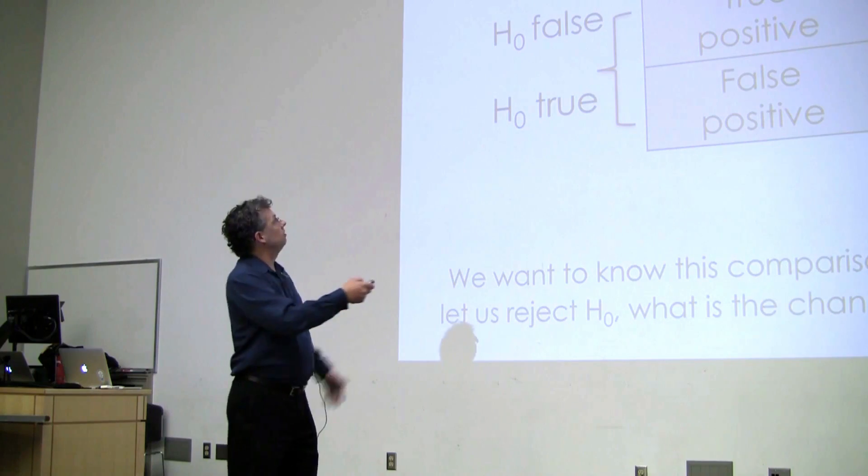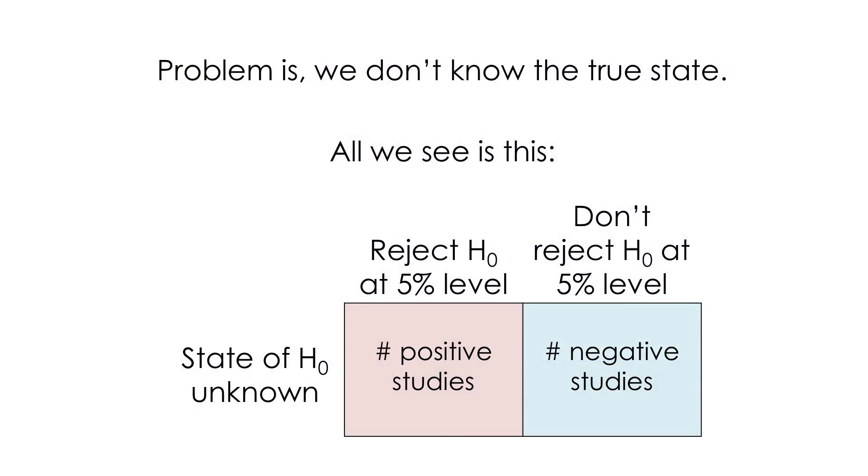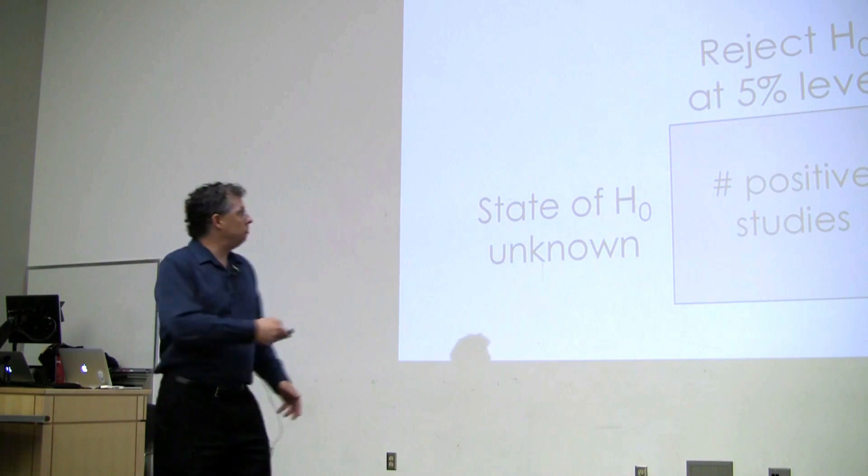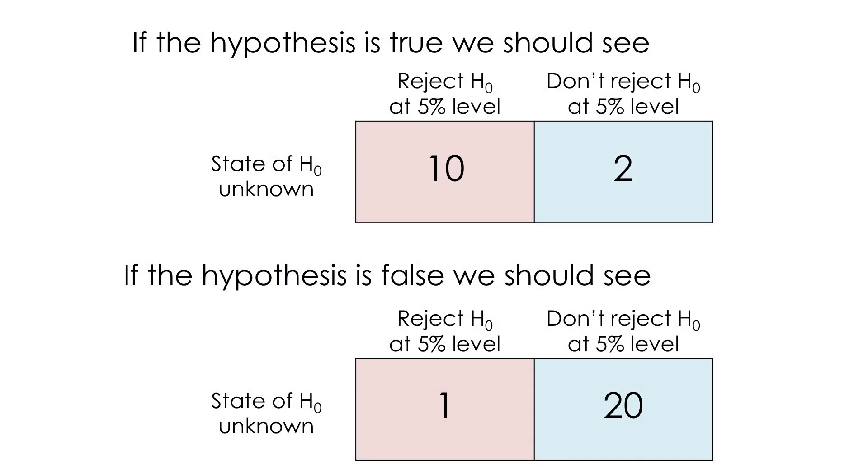Now the problem is, it's kind of straightforward when I draw this table out like this, but the problem is we don't get the whole table when we read the literature. Right? All we see in the literature is this. We don't know whether the null hypothesis is true or false. We just know that some number of studies got positive results and managed to reject it, and some number of studies got negative results and didn't manage to reject it. And somehow, from just knowing these two, we've got to kind of infer, well, is it true or false? And in principle, we should be able to do that.